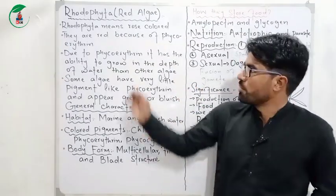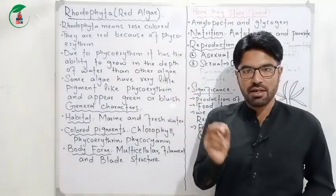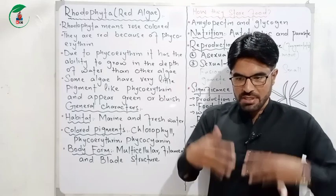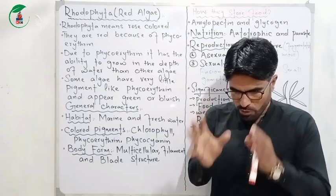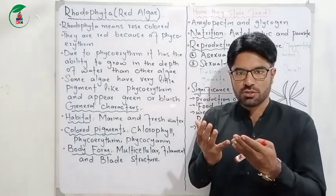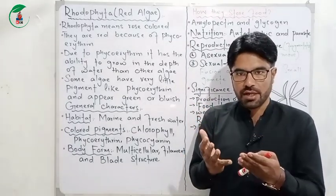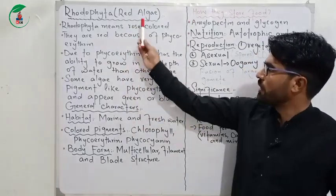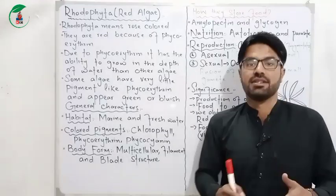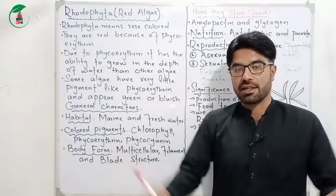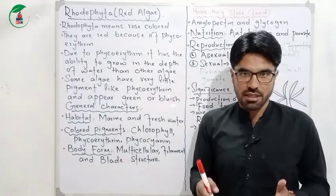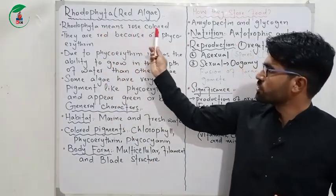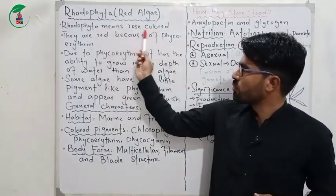Rhodophyta is called Red LG, which refers to red algae. It is called physical appearance. Rhodophyta means rose colour — it is called red because of its rose colour pigment.